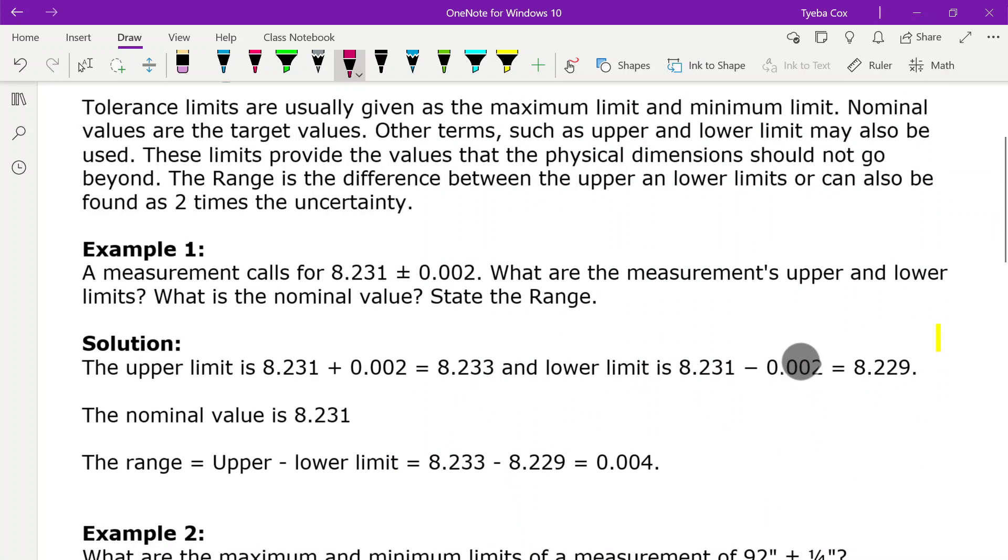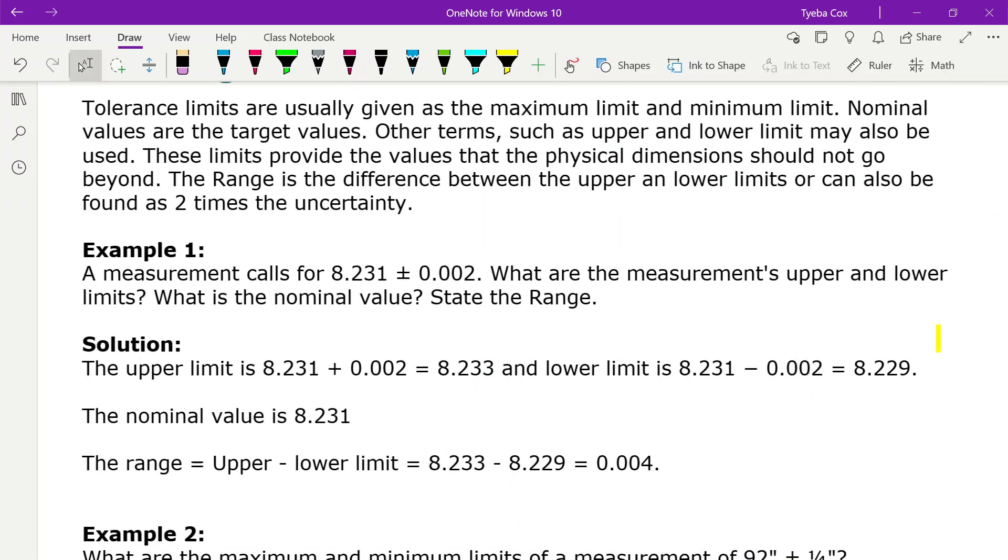Let's have a look at example one. The measurement calls for 8.231 plus or minus 0.002. What are the measurements upper and lower limits, what is the nominal value, and state the range.